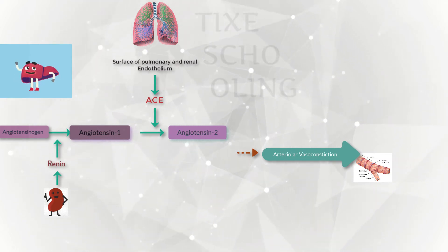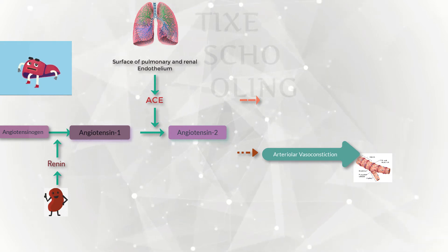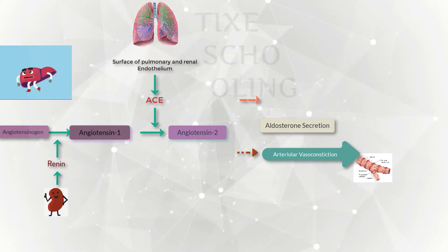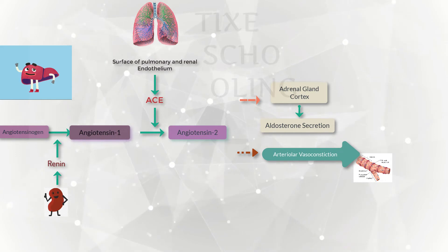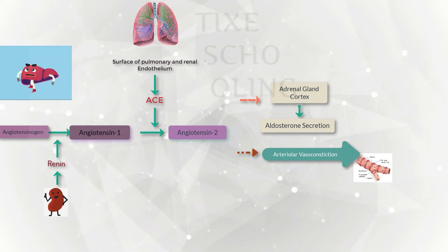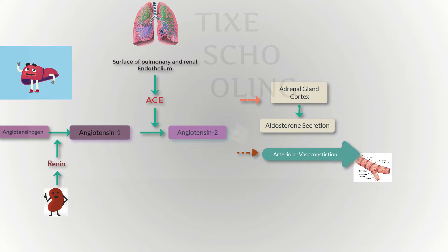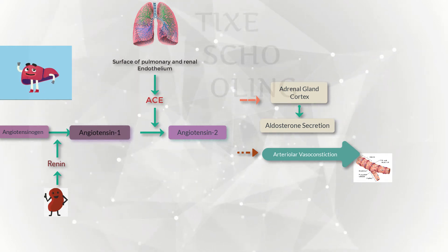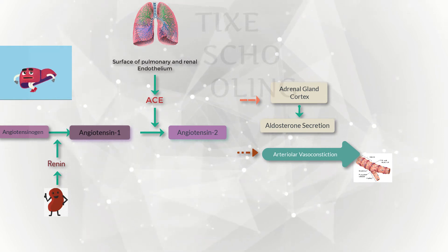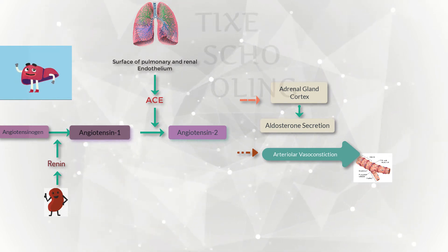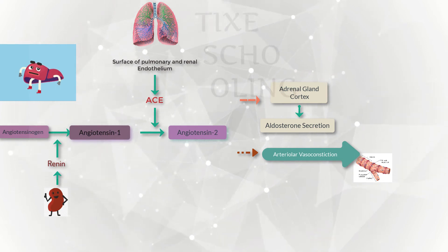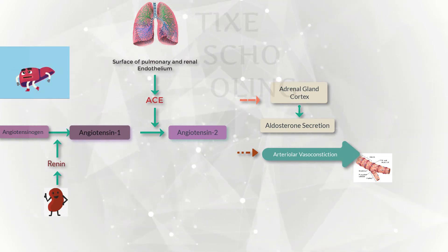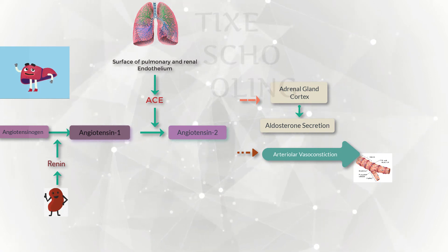Angiotensin-2 stimulates the release of the hormone aldosterone in the adrenal glands, which causes the renal tubules to retain sodium and water and excrete potassium. Together, angiotensin-2 and aldosterone work to raise blood volume and blood pressure, and restore the balance of sodium, potassium, and fluids.